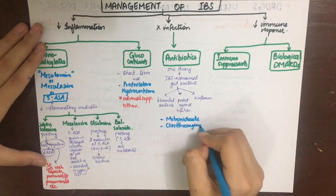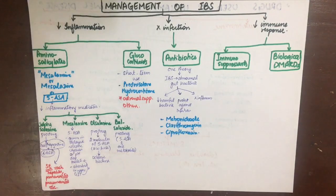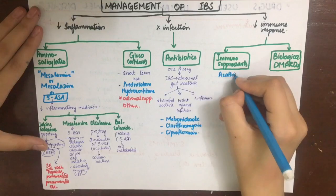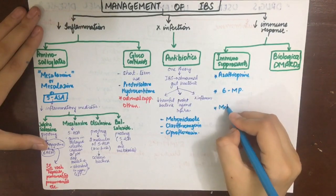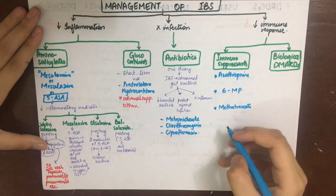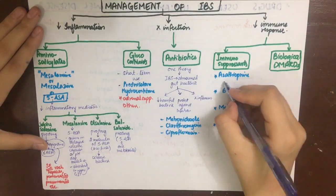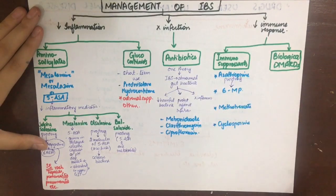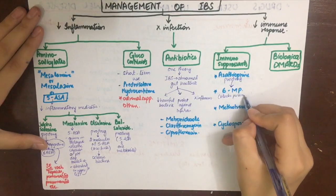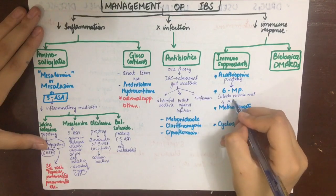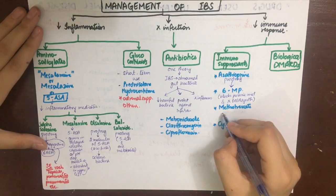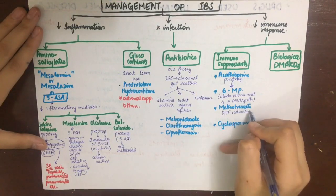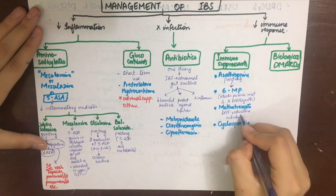The last approach to treatment of IBD is to decrease the immune response, using immunosuppressants and biological DMARDs. The chief immunosuppressants used are azathioprine, 6-mercaptopurine, methotrexate, and cyclosporine. Azathioprine is a prodrug of 6-mercaptopurine, which blocks purine metabolism and DNA synthesis, thereby inhibiting lymphocyte formation and decreasing antibody production and T-cell immunity.